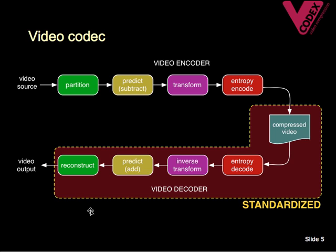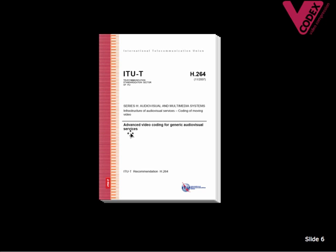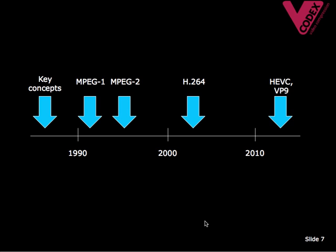A video coding standard typically specifies a compressed video format and a method of decoding that compressed video format, but it won't tell you exactly how to encode video. In practice, an encoder that's compliant with a standard has to produce a compressed file in the right format so that a standard-compliant decoder can decompress it successfully. There are actually a whole lot of standards — each one is a document that describes a video format and a decoding method in precise detail.